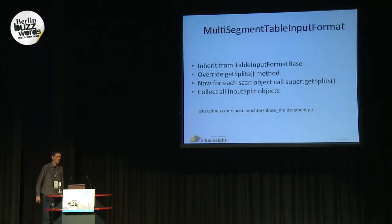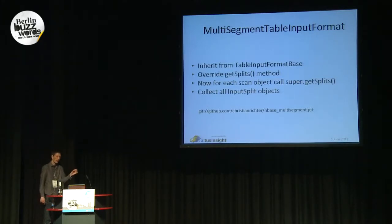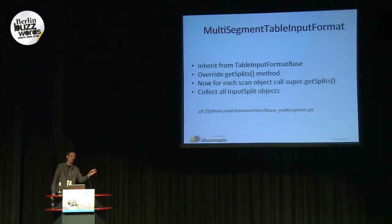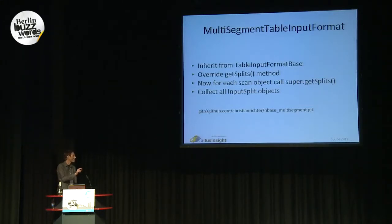What are the details of the multi-segment table input format? Essentially, we extended the table input format base. This table input format base has a method getSplits. This getSplits method takes a scan object and returns a list of input splits. Those input split objects are the input for the mappers. Instead of passing in one scan object, we iterated over our list of scan objects, and for each scan object we called the getSplits method from the base class.